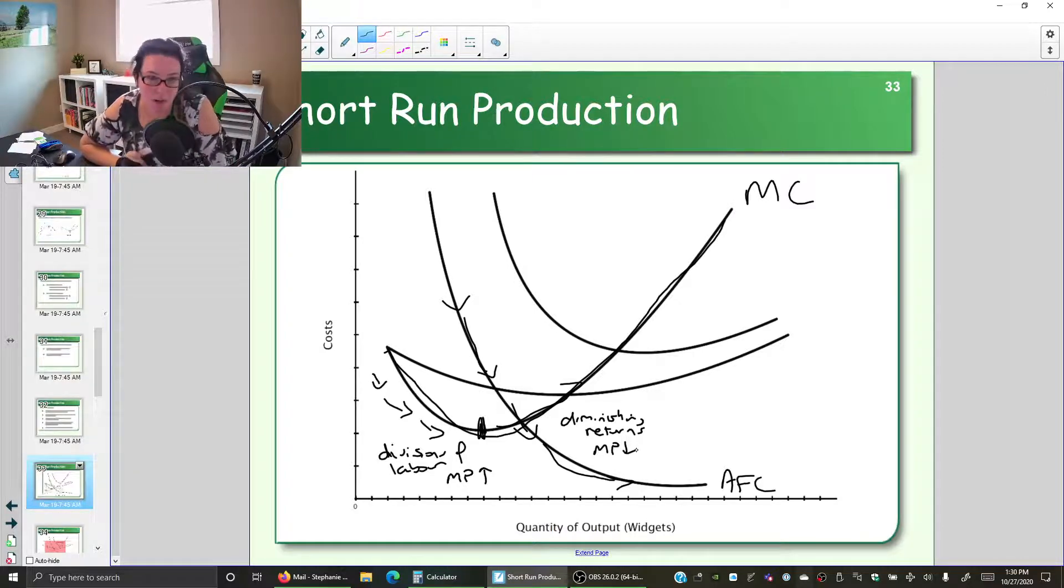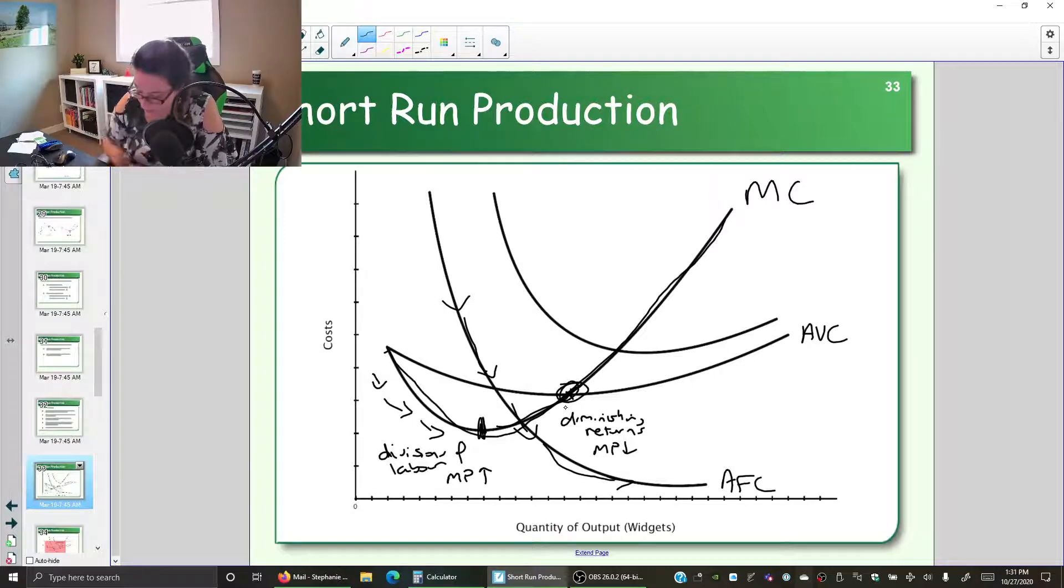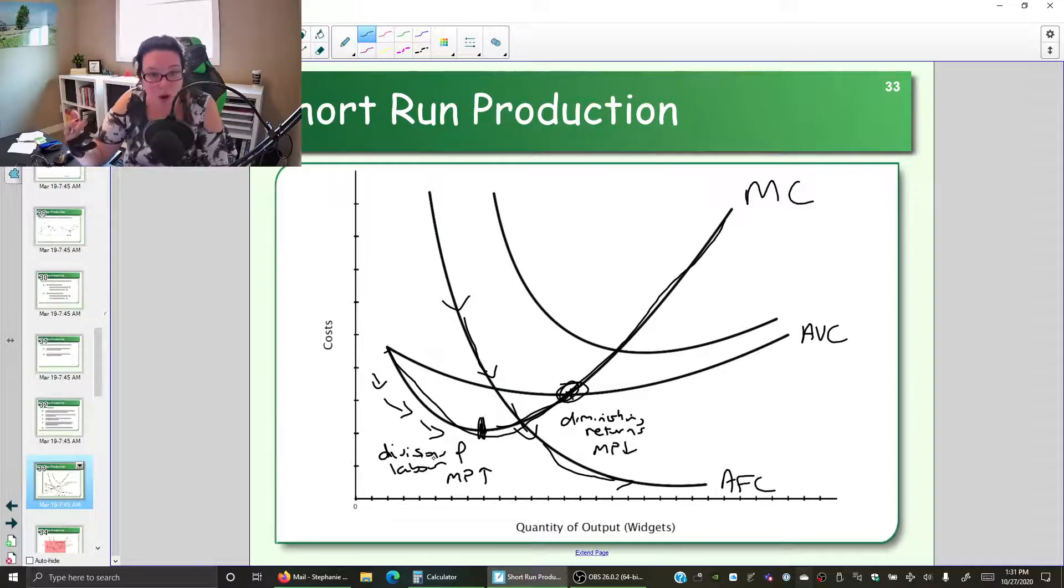We have two more curves. Average variable cost has a U shape. Notice where the bottom of the U is—it's always where it intersects marginal cost. That's because if the marginal is below the average, the extra cost is less than the typical cost, so it pulls the average down. And if the extra cost is above the average, it pulls the average up.